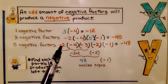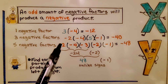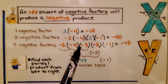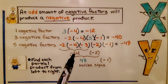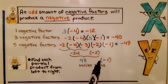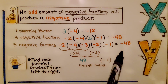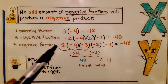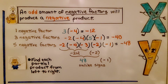Here we have five negative factors, all negative. Negative 2 times negative 4 is positive 8. Positive 8 times negative 3 is negative 24. Negative 24 times negative 2 — like signs — is positive 48. Positive 48 times negative 1 — unlike signs — is negative 48. We can find each partial product from left to right, and since there are five negatives — an odd amount — the product is negative.